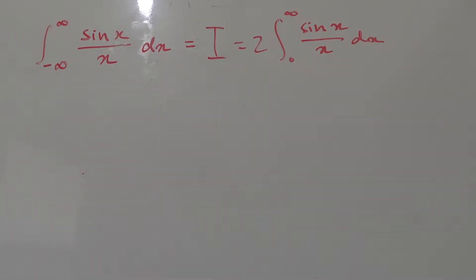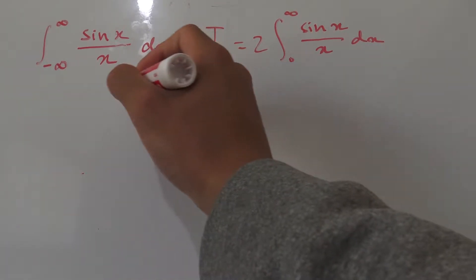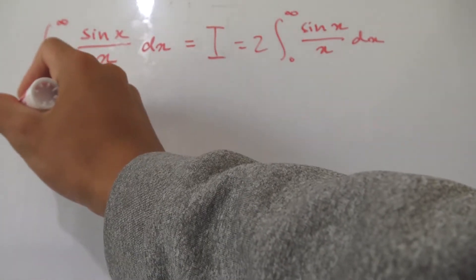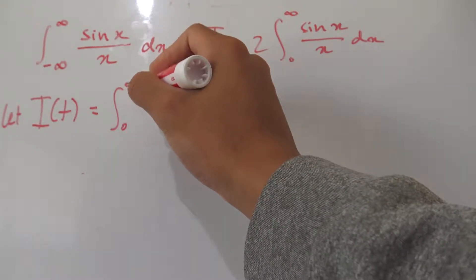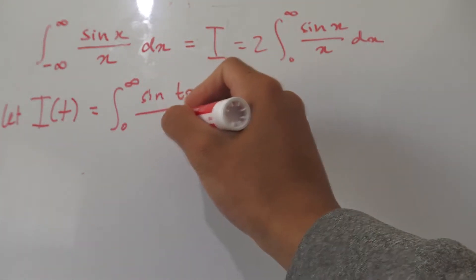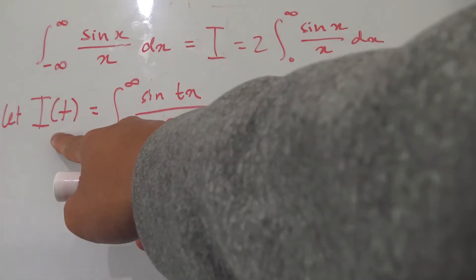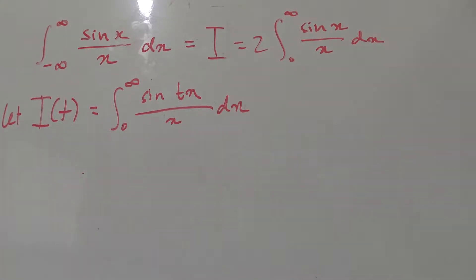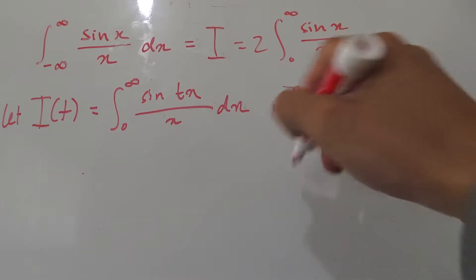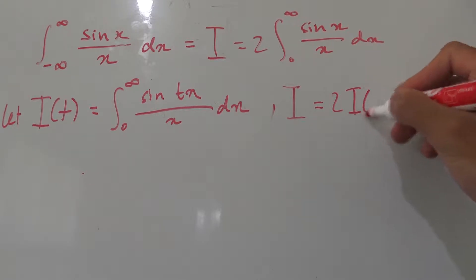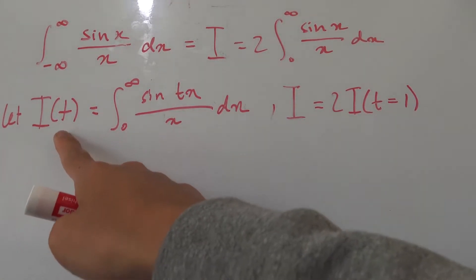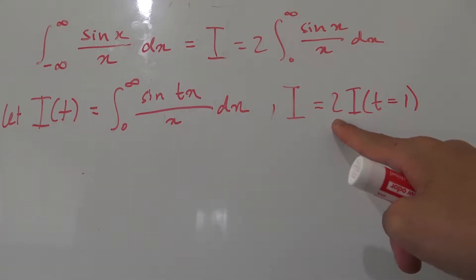So what can we do with this? We want to introduce a new parameter. I'm going to define a new function — let's call it i of t — and let that equal the integral from 0 to infinity of sine of t times x over x dx. I've put the parameter t inside the argument of sine. Notice that if we set t equals 1, the integrand is just sine of x over x. Our original i is 2 times i evaluated at t equals 1, so plugging in 1 and multiplying by 2 will give us i.